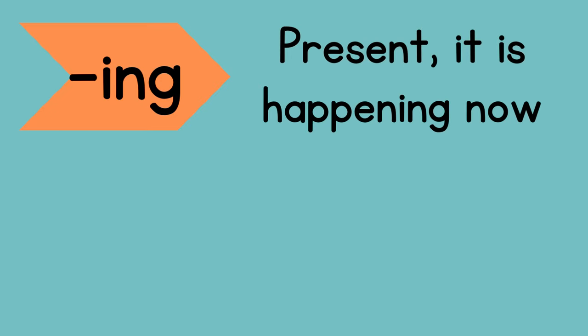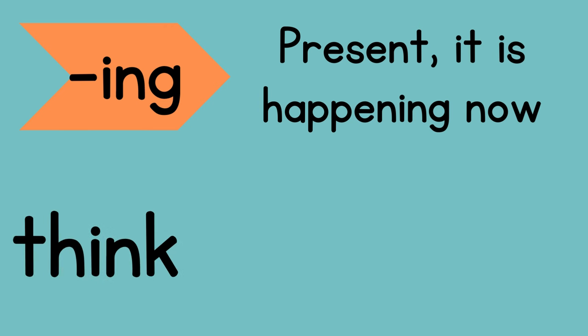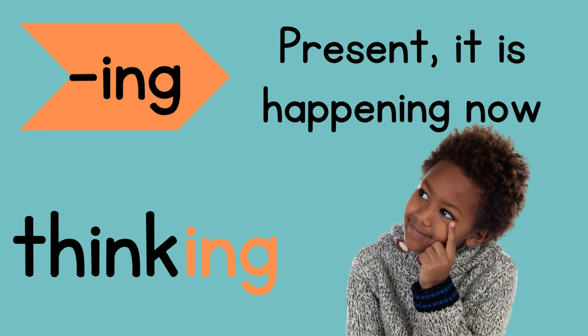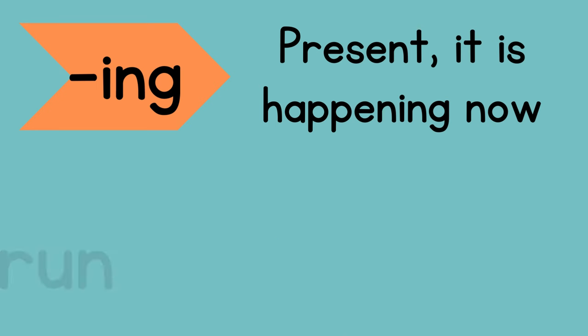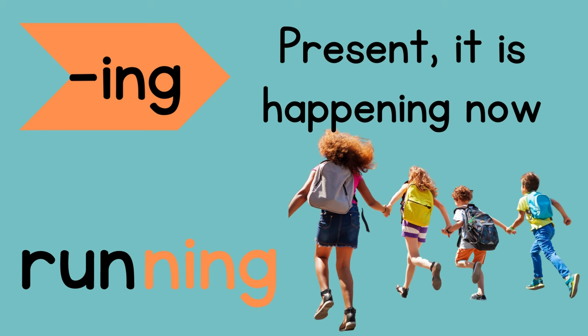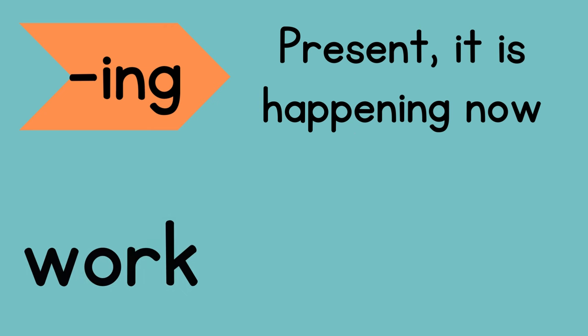Another common suffix is -ing. This is also used with verbs a lot of times, but instead of meaning past like -ed, it means present — right now. So here's the base word think. If you're doing that right now, we would add -ing and say thinking. Here's another example: run. It's happening right now, so our word would be running — here we add an extra n because there's a short-u vowel. If we have the base word work and we mean it's happening right now, we add -ing and get working.